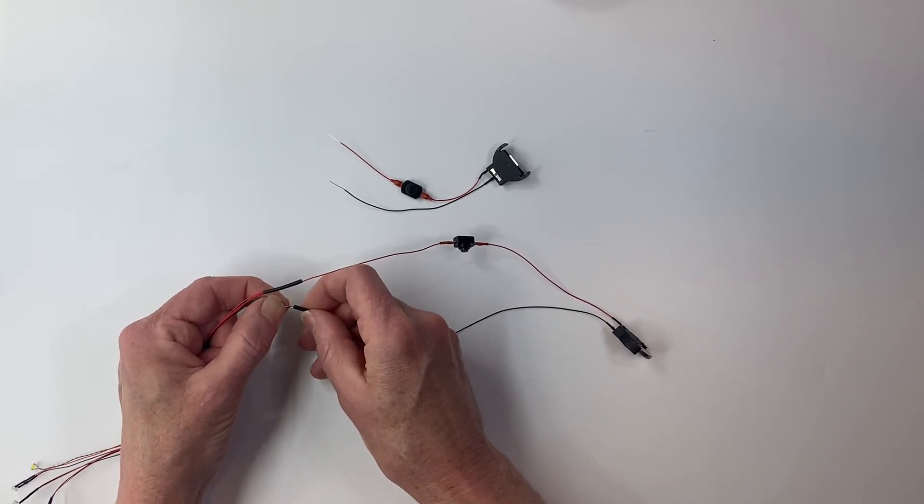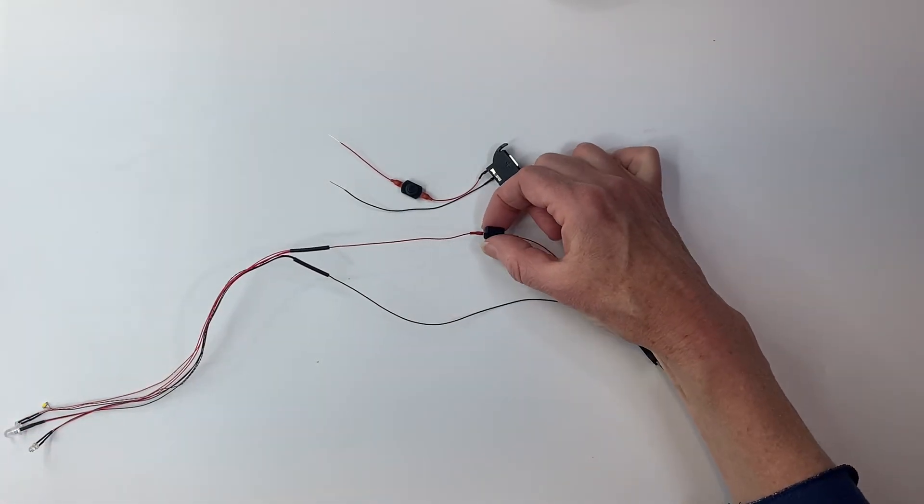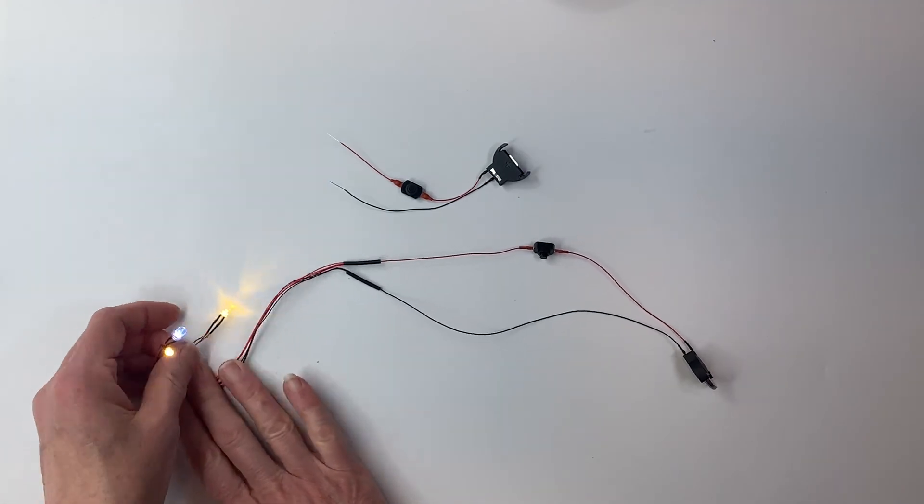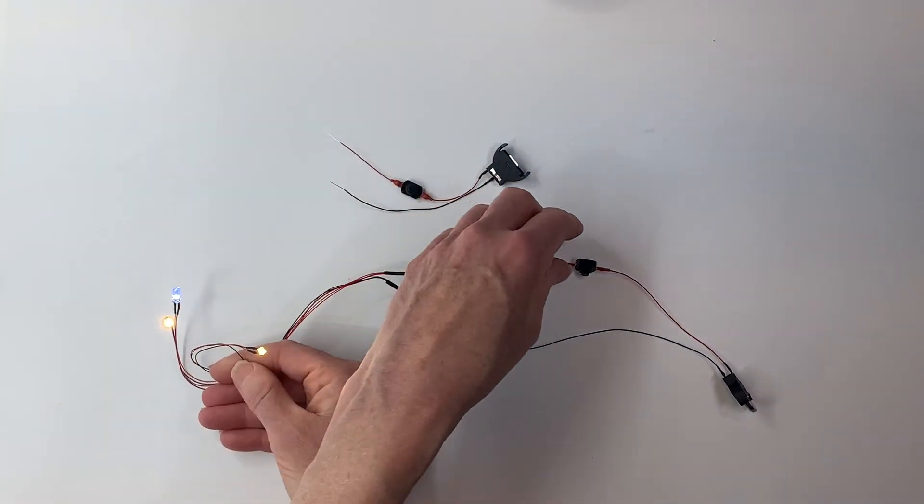So before I heat the shrink tube, what I like to do is just press the button once, make sure all of my lights light and now I know I can go ahead and shrink the shrink tube.